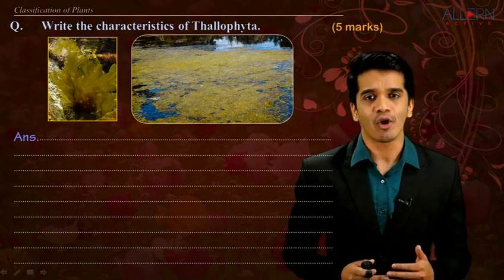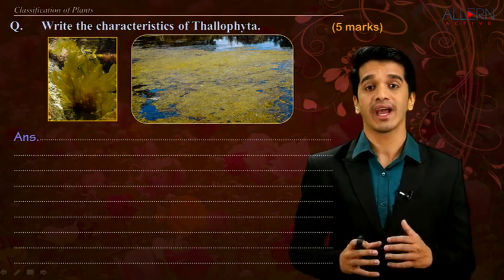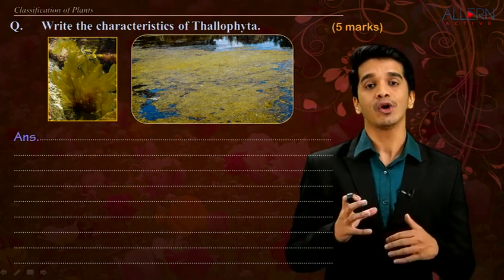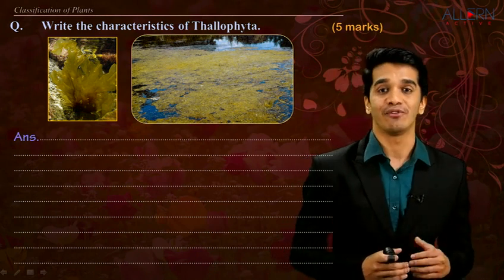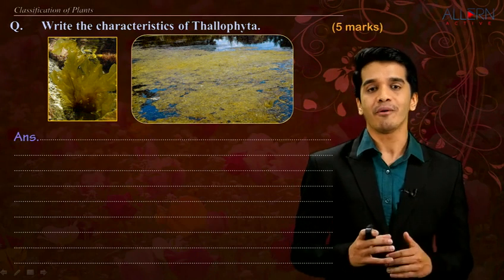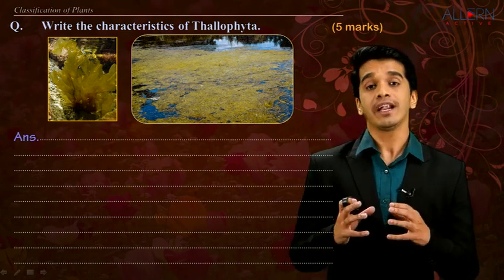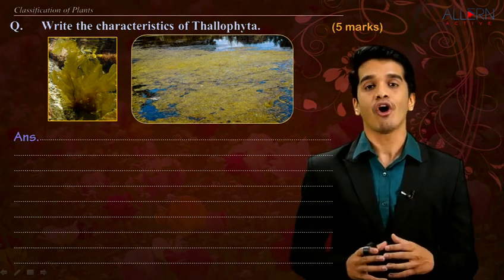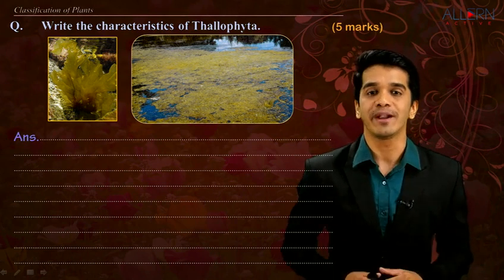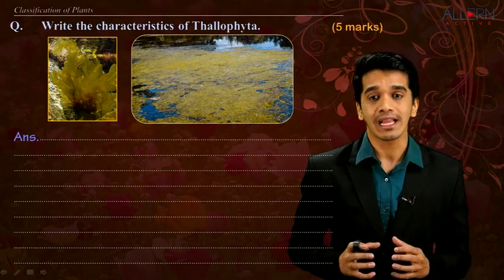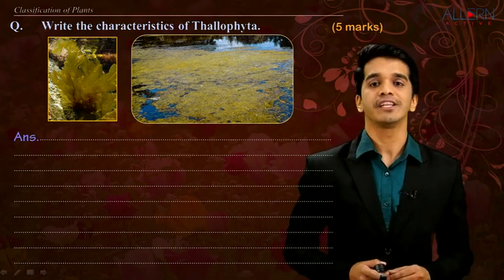Different examples of thallophyta are also there. We have seen Spirogyra, which can be grown in fresh water as well as in saline water, and they perform a process called photosynthesis. Now there are different types of fungi, but fungi do not possess a pigment called chlorophyll, but they still come under thallophyta.